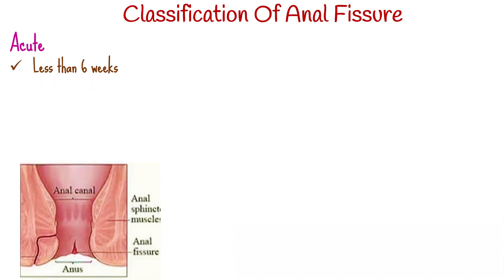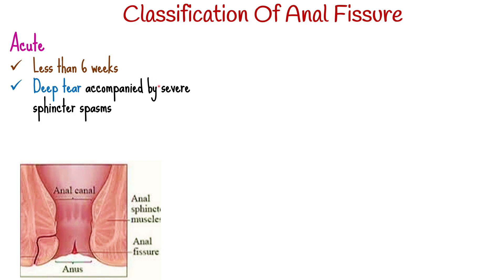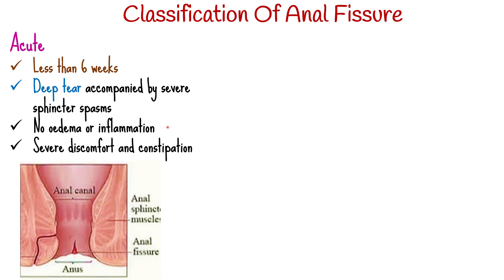Anal fissure can be classified in various ways, but here we will look at the classification based on duration. Acute anal fissure is present for less than 6 weeks. It is a deep tear in the lower anal skin accompanied by severe sphincter spasms, but no edema or inflammation. It is characterized by severe discomfort and constipation.